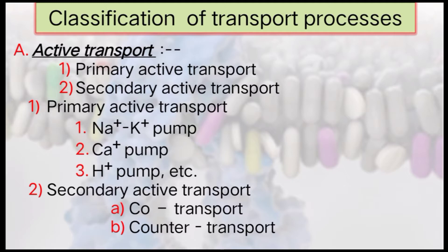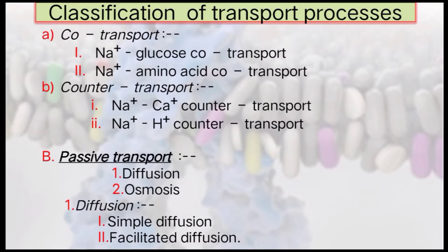Secondary active transport is classified into co-transport and counter-transport. Examples of co-transport mechanisms are sodium-glucose co-transport and sodium-amino acid co-transport. In counter-transport, there are sodium-calcium counter-transport and sodium-hydrogen counter-transport. Passive transport mechanism is classified into diffusion and osmosis.